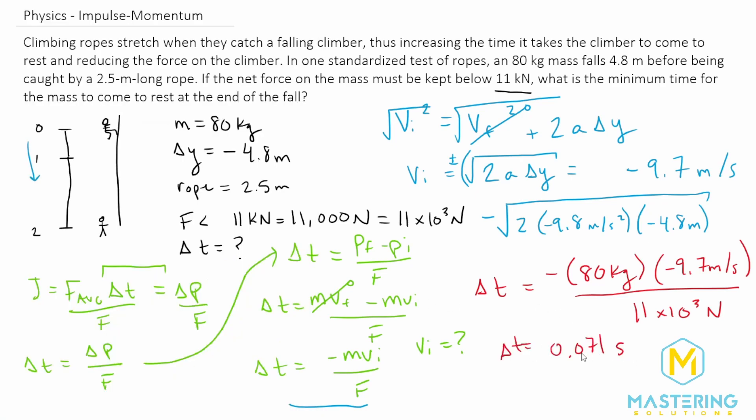I've gone through and triple checked this question, and this is the correct answer here, 0.071 seconds. However, in mastering physics they say that the correct answer is 0.71 seconds. I've gone through and calculated it out, and I've done exactly what they do as well in the problem, and I get 0.071 every single time. I just think they had a typo on this problem.